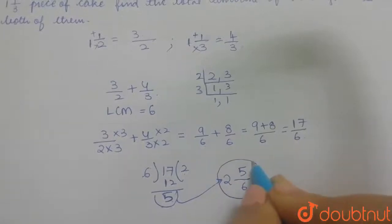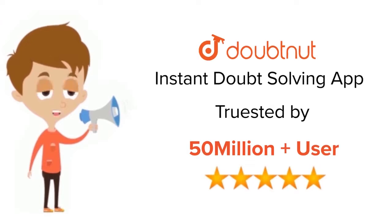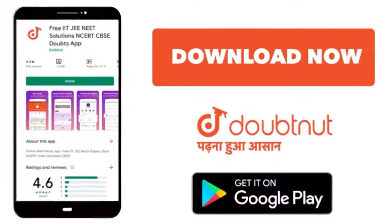Your final answer is 2 5/6. For class 6 to 12, IIT, and NEET level, trusted by more than 5 crore students. Download Doubtnet app today.